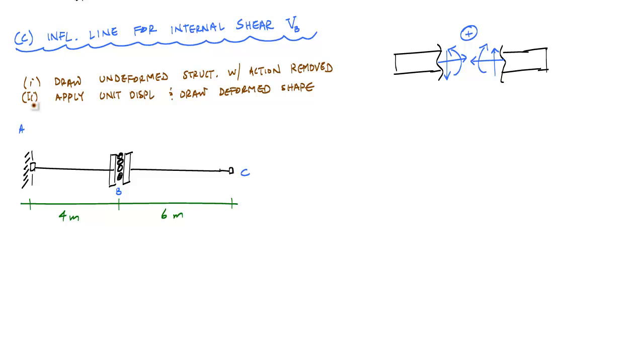So here, the key is, which way do I need to move at this point? And for this internal shear, we're going to apply the motion in the same sense as my positive internal sign convention. So if I were to make a cut here and I look at the left side of the cut, this point needs to go down and this point needs to go up. And the relative distance between these two ends must equal one.